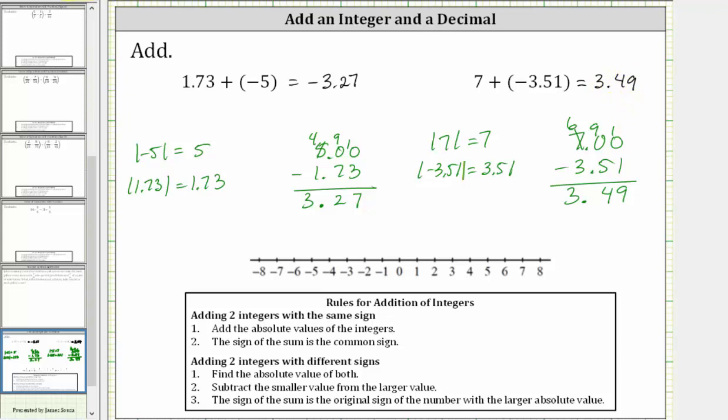Let's model this on the number line. For seven, we start at zero and move right seven units. Then because we are adding negative 3.51 from positive seven, we move left 3.51 units to approximately here, which gives us positive 3.49.